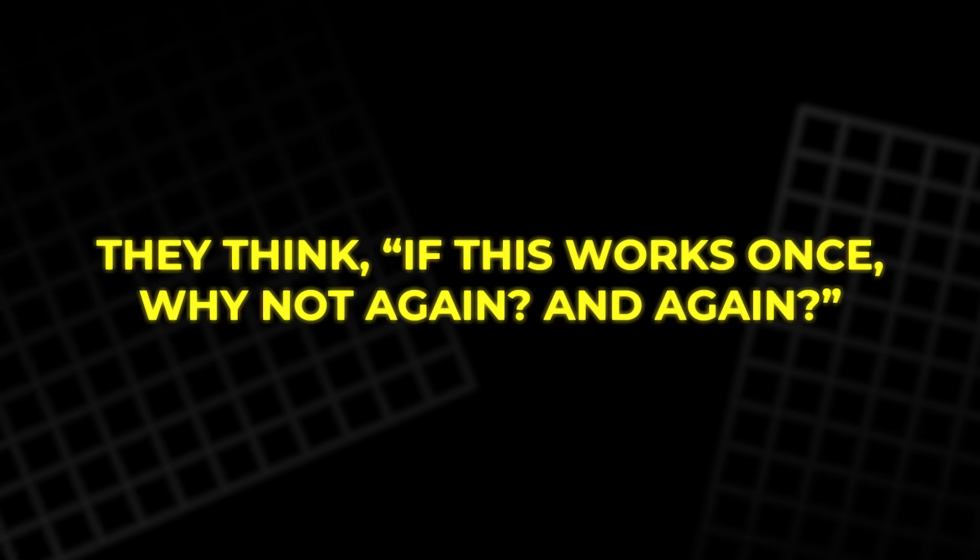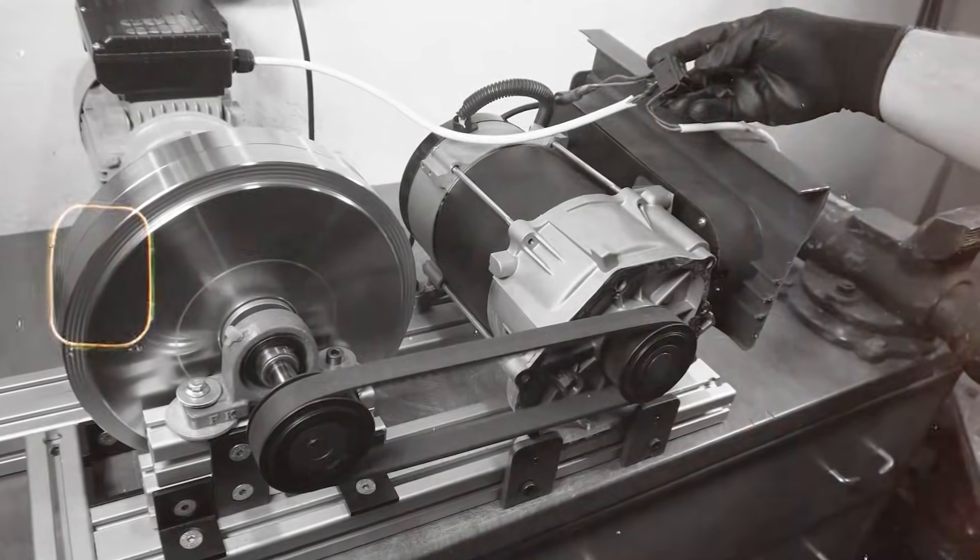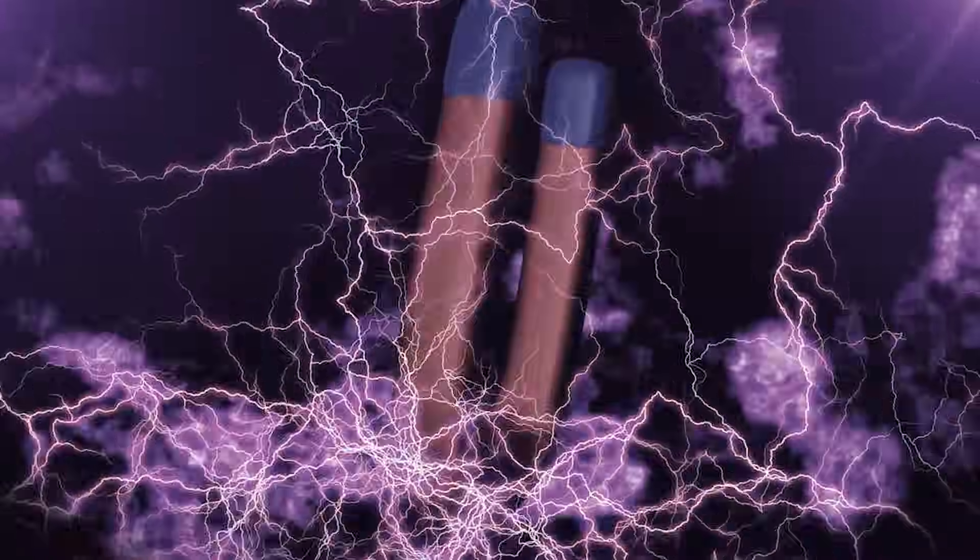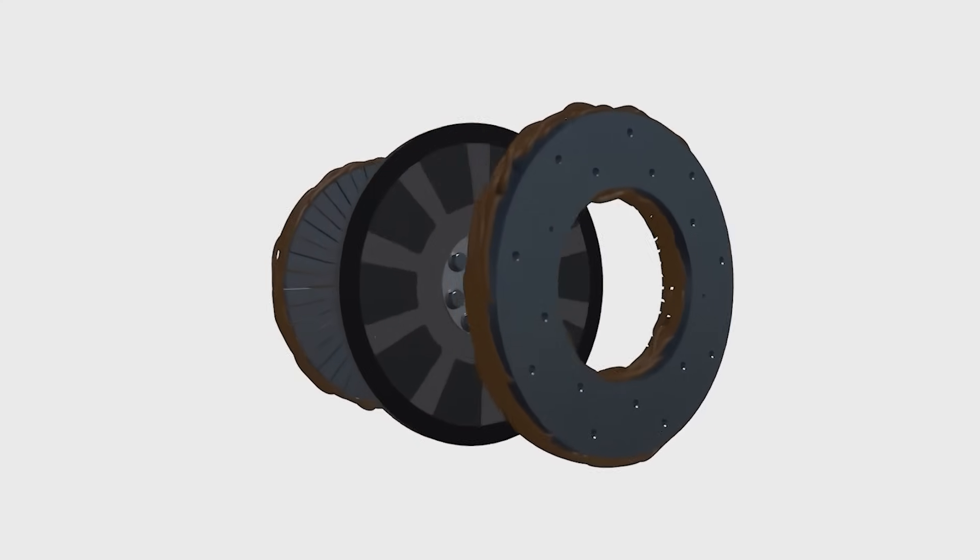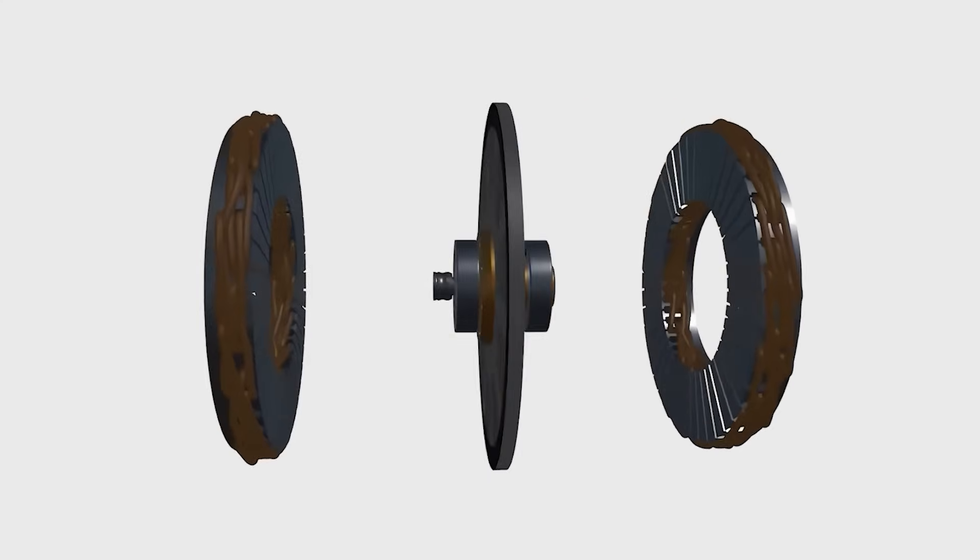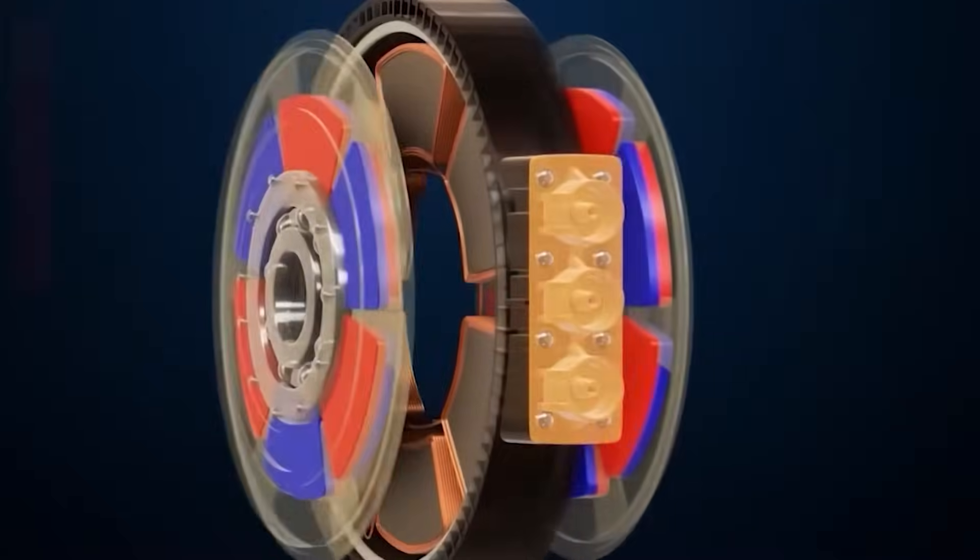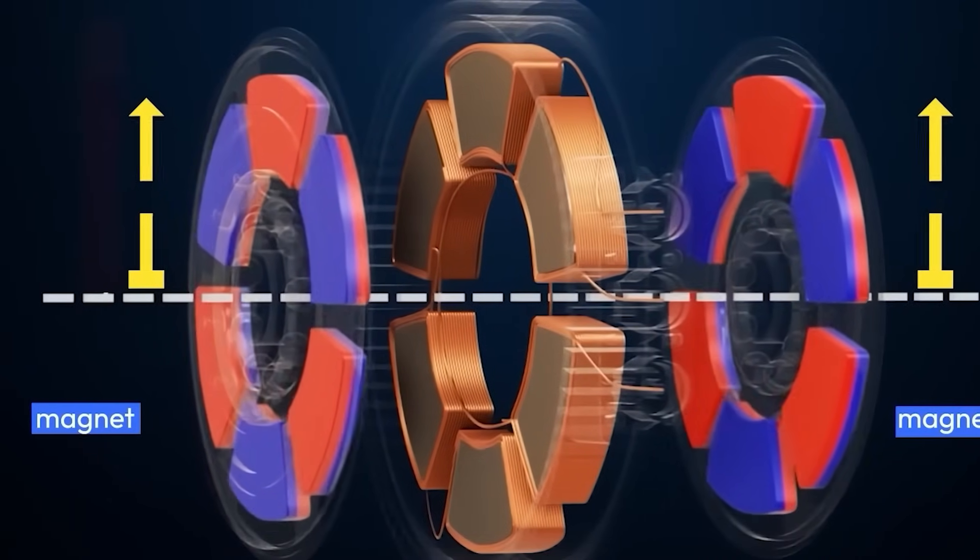They think, if this works once, why not again and again? That is how excitement builds. So the idea grows. What if the V were made longer to increase the acceleration? That works until the roller reaches the end of the V and stops gaining speed. Then people imagine bending the V into a circle. If the roller keeps entering new V-shapes, maybe the acceleration will never stop.